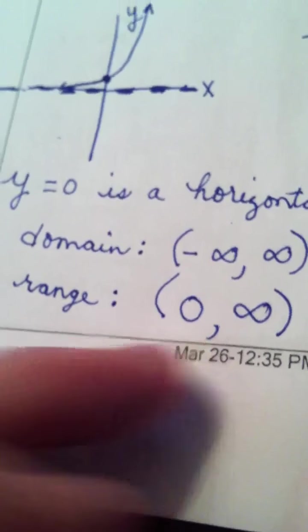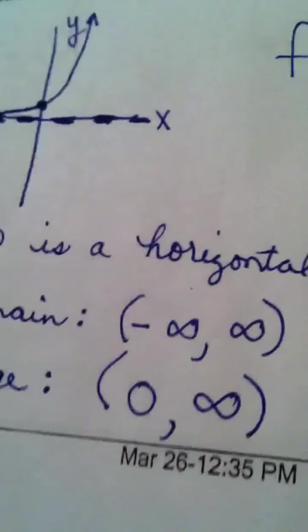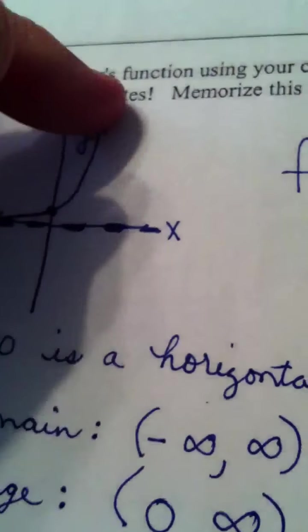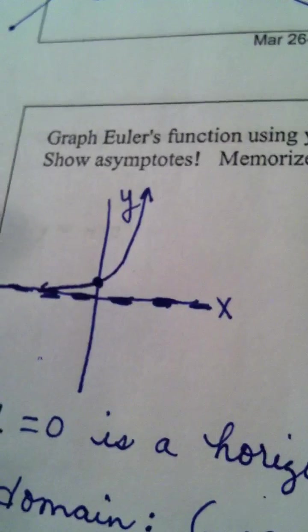That's why we put a paren on it. It's y values above 0, but never equal to 0. And that is the basic shape of Euler's function.